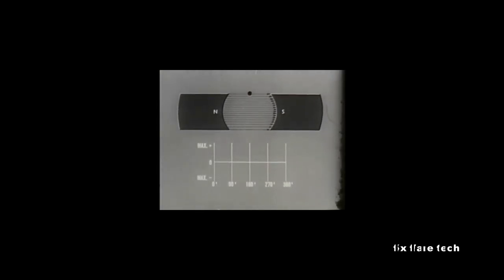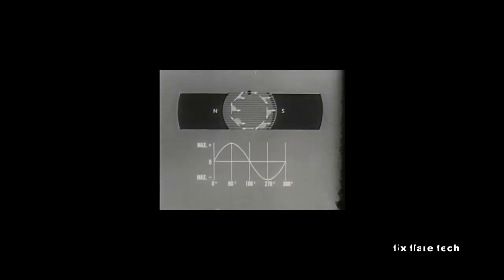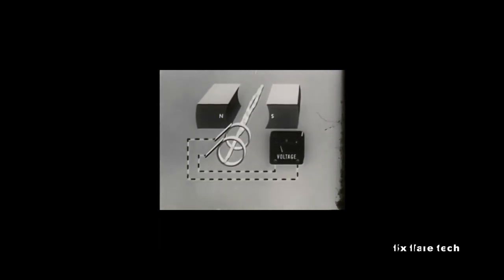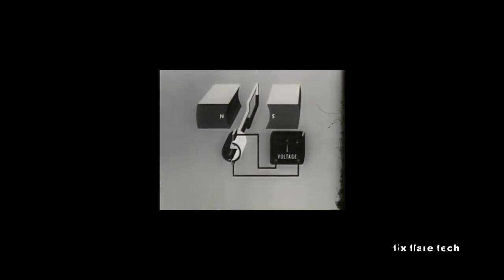A graph of EMF versus conductor position during one revolution will be a sine wave representing alternating current or AC. All rotary generators produce AC internally. What you have seen so far is really the theory and operation of a basic AC generator. But our purpose was to explain the principles of operation of a DC generator.